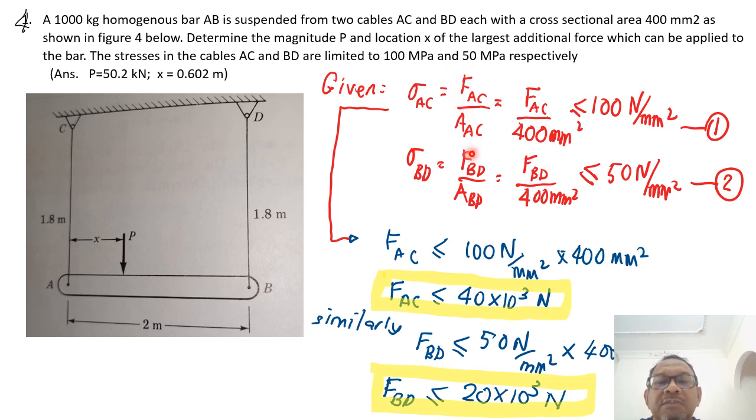So what do we do? We always start with the data that we get from the question. So what are the data that we get from the question? There are areas 100 mm square for example. There is this weight of this 1000 kilogram. And then we got the stresses, the limiting stresses of AC and BD. So here I use the sigma AC as the limiting stresses in cable AC. So it equals to FAC divided by AAC. And that's less than 100 N per mm square. Similarly, we say that for sigma BD, this rope here, this wire here, equals to FBD divided by area. FBD and area is 400 mm square. And FBD, all this must be less than 50 N per mm square.